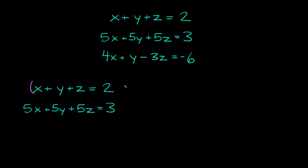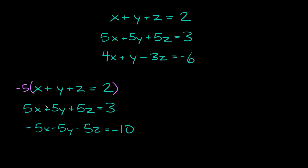So if we're gonna get rid of x we're gonna have to multiply this entire equation by negative 5. So then we'll have negative 5x on top since we have a positive 5x on the bottom. So if we do that and distribute we're gonna get negative 5x minus 5y minus 5z is equal to negative 10. And then we'll bring this second equation back down: 5x plus 5y plus 5z is equal to 3.